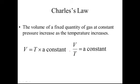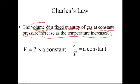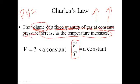Charles' Law is a relationship between the volume of the gas and the temperature of the gas. Just like yesterday, let's talk about the word equation first. The volume of a fixed quantity of gas — the pressure is constant. We know the amount of gas isn't going to change and the pressure isn't going to change. The volume of a gas increases as the temperature increases. We call this a direct relationship. Boyle's Law was an inverse relationship; this is a direct relationship. When one goes up, the other one also goes up.